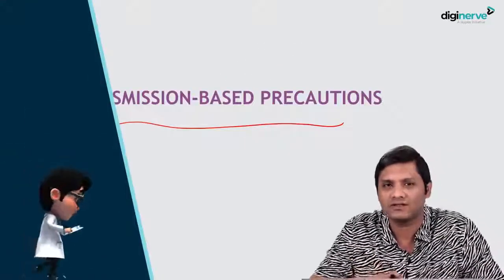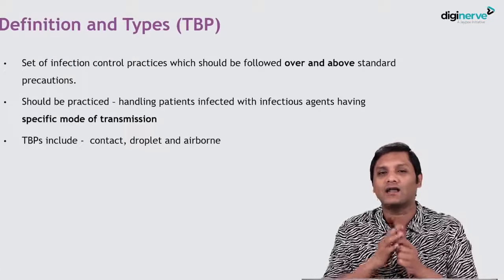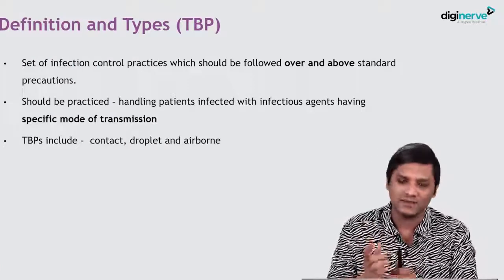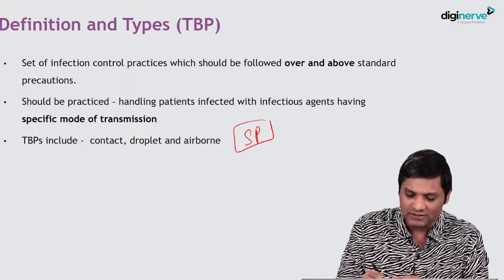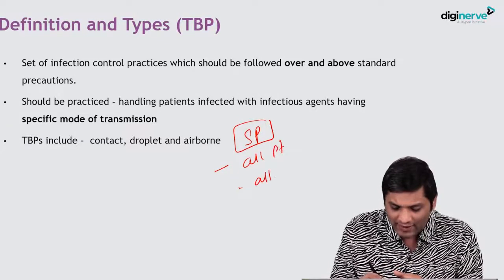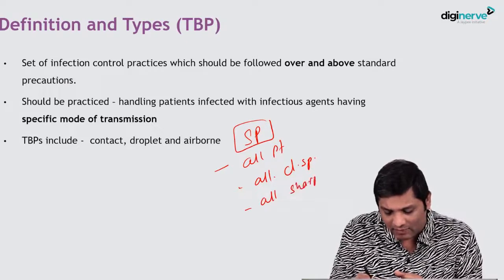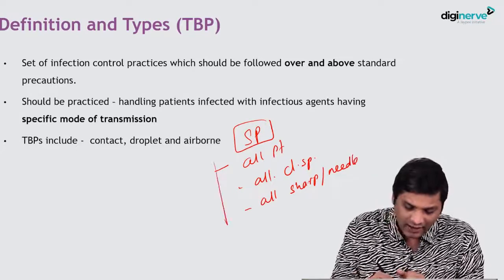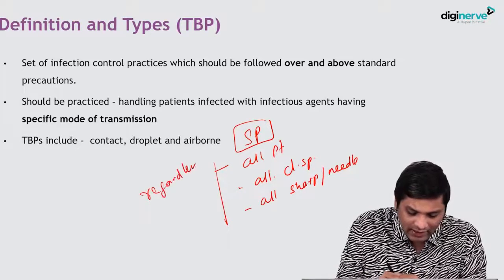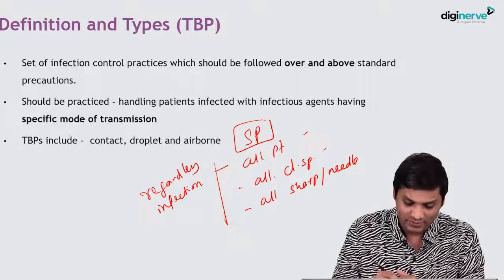The question is how transmission-based precautions differ from standard precautions. Standard precautions are the set of infection control practices which have to be implemented in all patients, while handling all clinical specimens and while handling all sharps and needles — regardless of the infection status of those patients, specimens, or sharps.